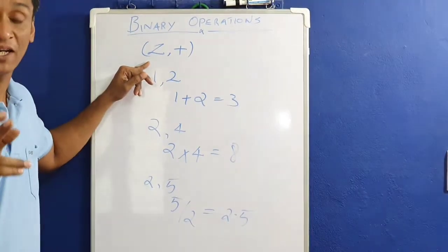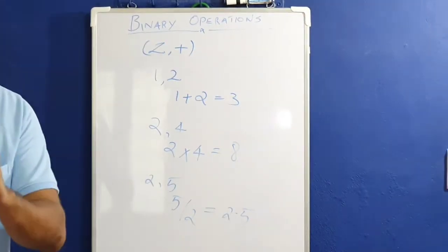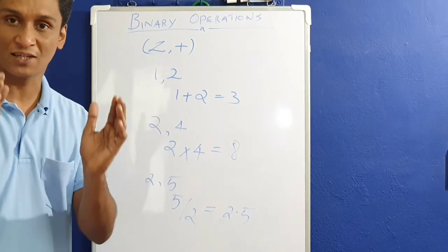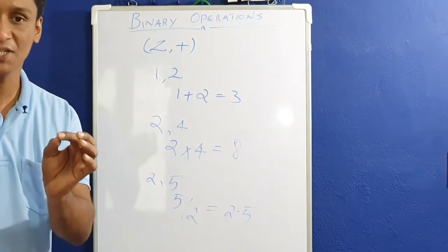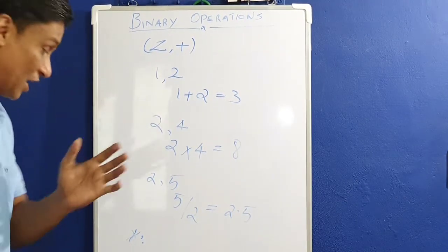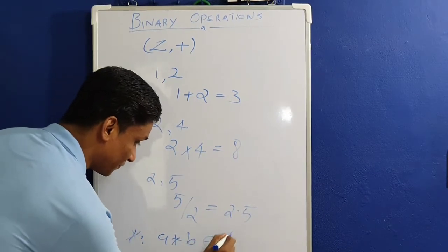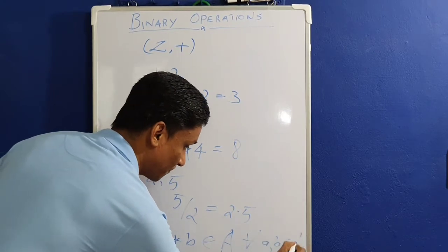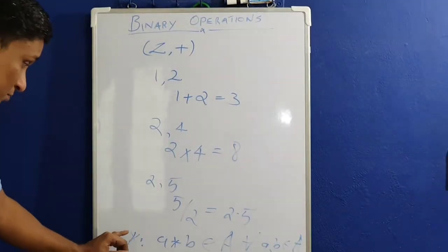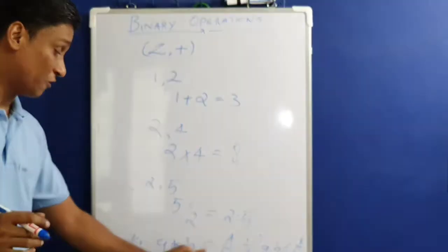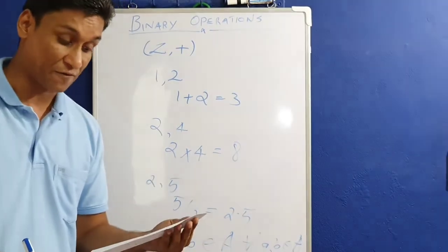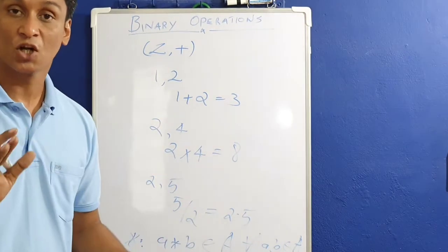So, addition is a binary operation on the set of integers and multiplication is a binary operation on the set of integers, whereas division is not a binary operation on the set of integers. A star B is called the binary operation if A star B is an element of the set A, for all A, B elements of A. A binary operation star on a set S is a function from S cross S into S.